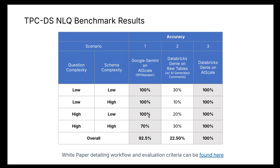You can see within our white paper just how accurate natural language queries can be when talking to a semantic layer like AtScale's. In columns 2 and 3, you can see the results for Databricks Genie. On the raw TPCDS tables, even with generated comments for tables and columns, we didn't get as good accuracy as Databricks Genie on an AtScale semantic model. So why did we get this kind of lift in accuracy with a semantic model?